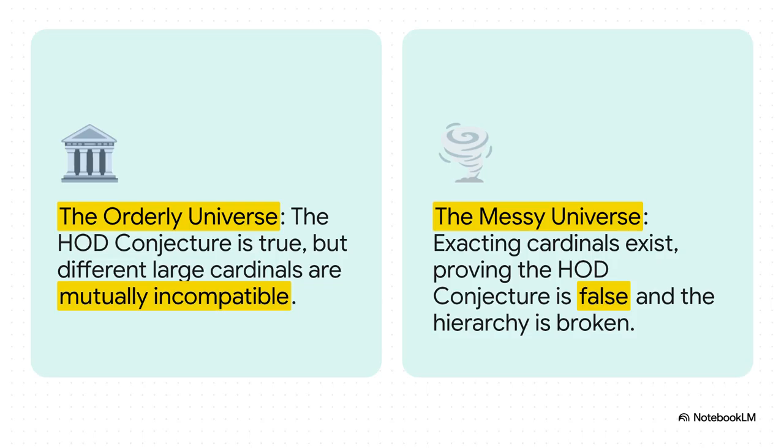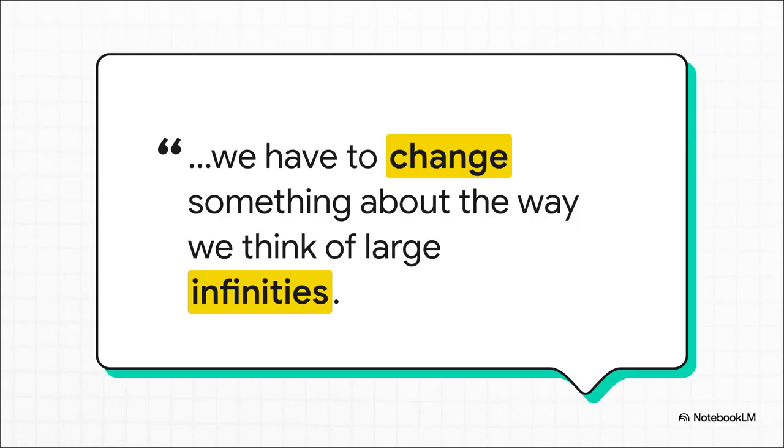Or, we live in a messy universe, where exacting cardinals do exist, which proves our neat and tidy ladder of infinities was, at best, a wildly incomplete picture of a much, much stranger reality. The authors themselves put it best. No matter which of those paths turns out to be true, their discovery means one thing for sure, and I'm quoting them directly here. The results of this paper suggest that we have to change something about the way we think of large infinities.